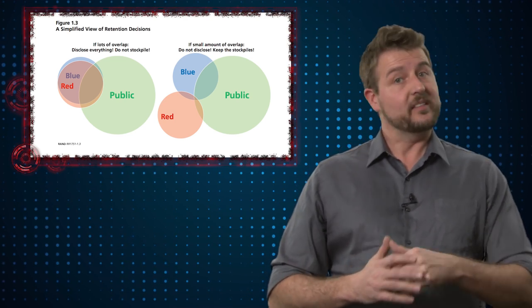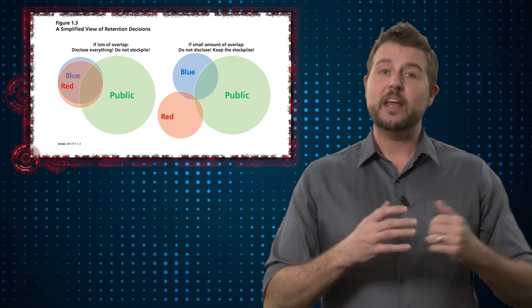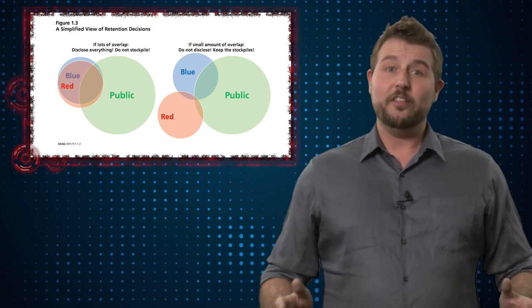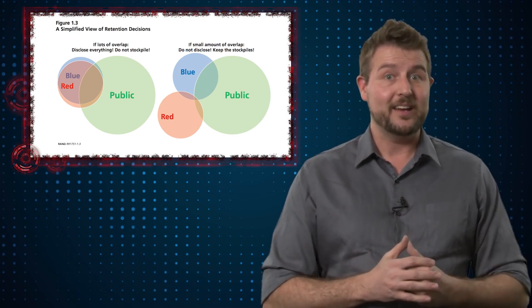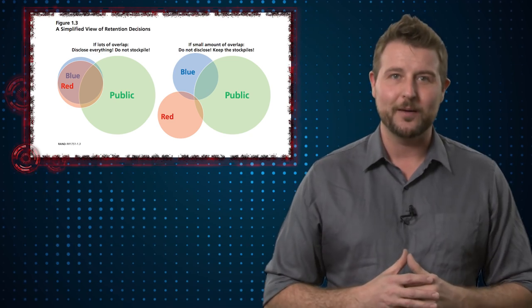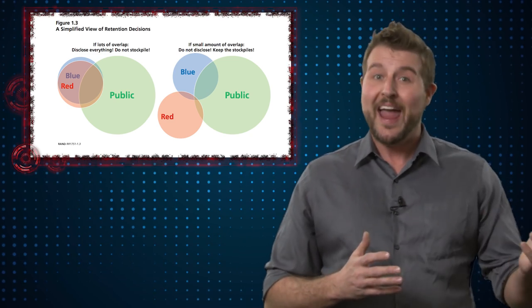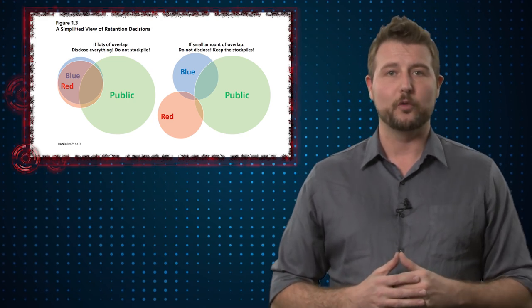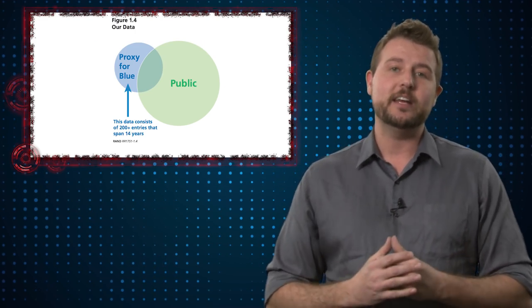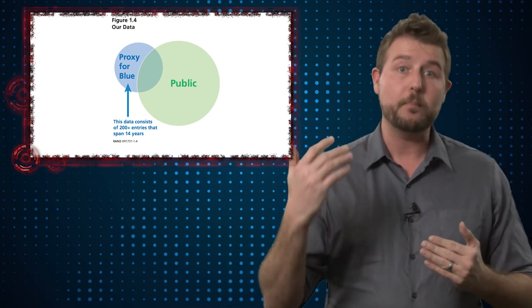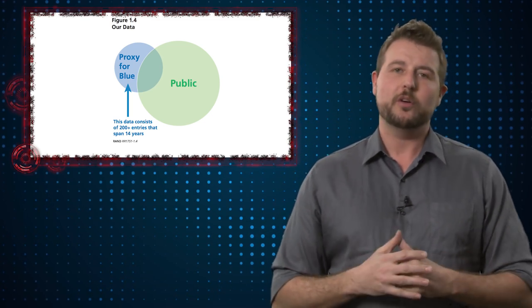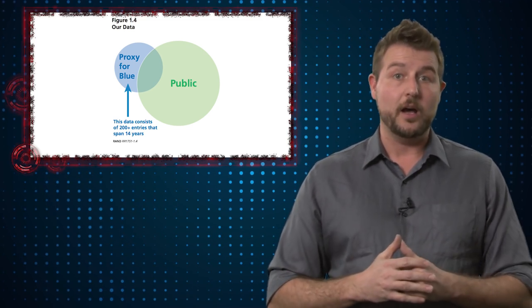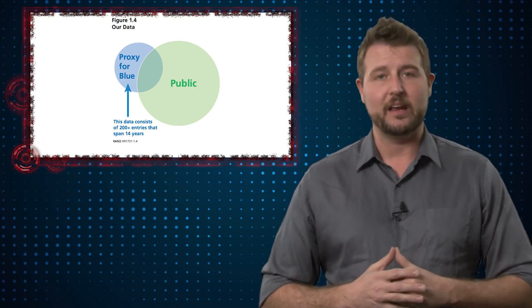What I'm really worried about is the criminal actors or the other nation states out there that may have also found these particular vulnerabilities. Those other actors, just like nation states, are not going to disclose whether or not they know something. So it's impossible for RAND to know if a criminal organization already knows one of these 200-some vulnerabilities. They could only study against when a vulnerability went public for the whole world. I actually think this collision metric isn't a true value for how often other actors might learn of the same vulnerability.